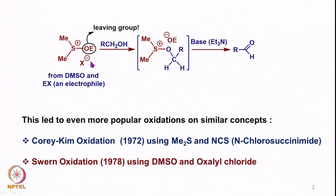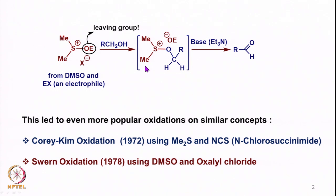Basically, DMSO is activated by an electrophile — whether DCC or pyridine sulfur trioxide — to form an intermediate where the oxygen of DMSO reacts with the electrophile to form a leaving group. The alcohol then reacts with the sulfur, the leaving group departs, and upon treatment with triethylamine as a base, the aldehyde is formed. As confirmed by Torcel's studies, the hydrogen from the methyl group is removed as a proton, generating an anion which then intramolecularly abstracts the hydrogen, and oxidation takes place.